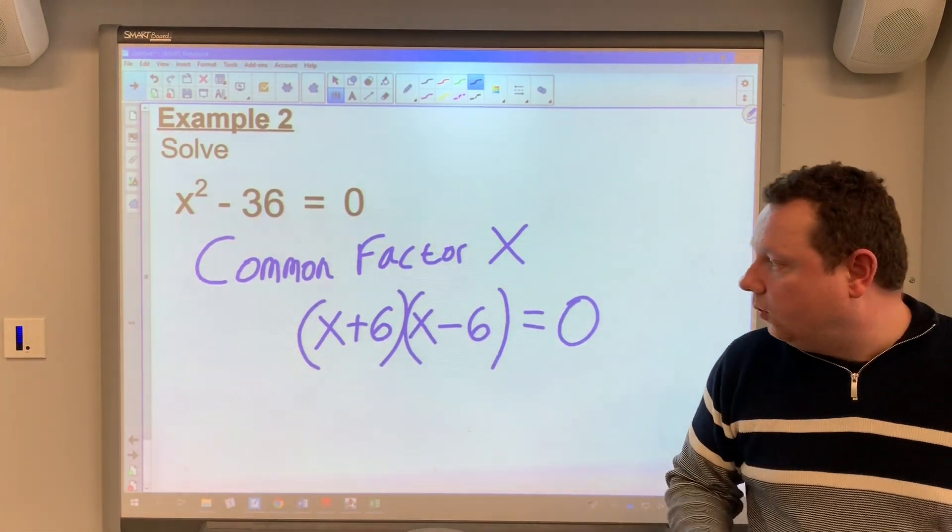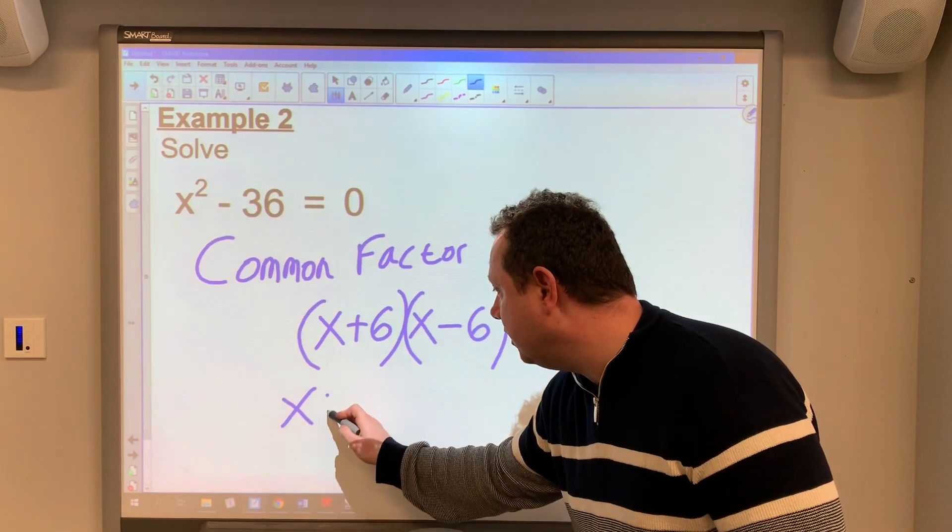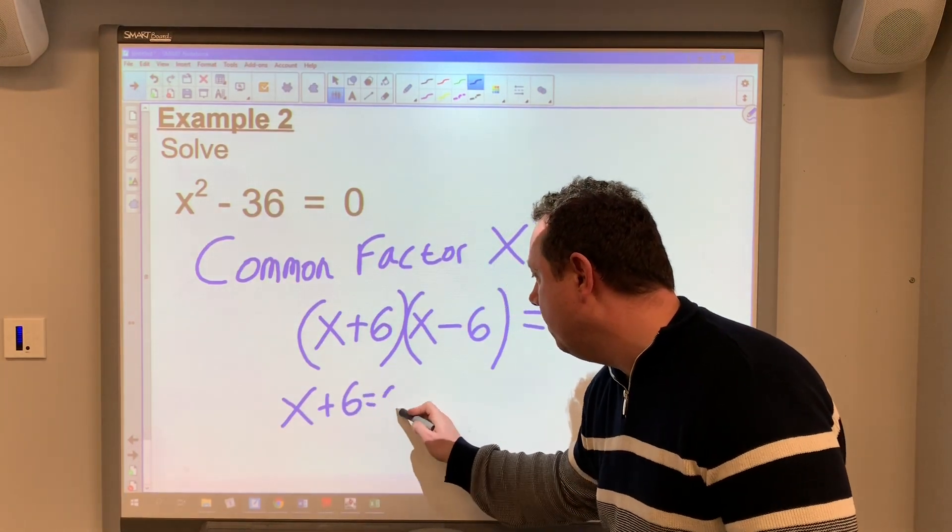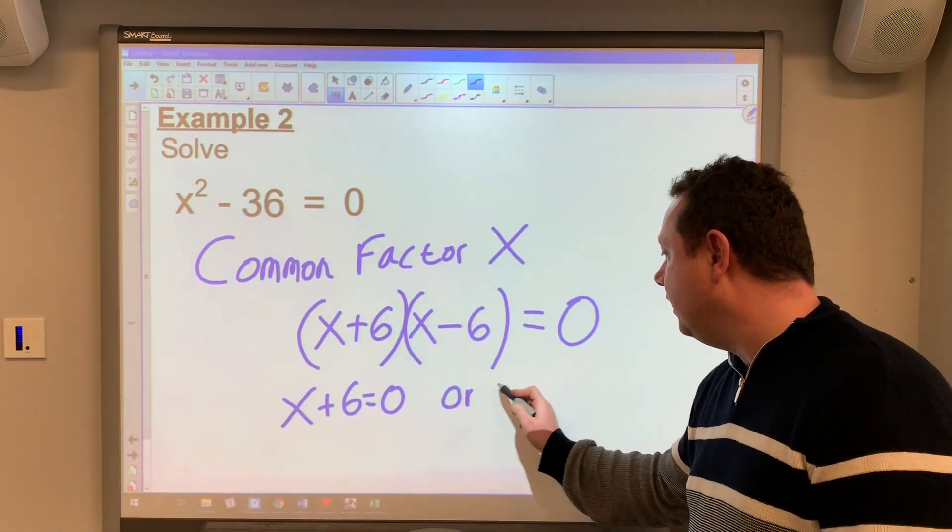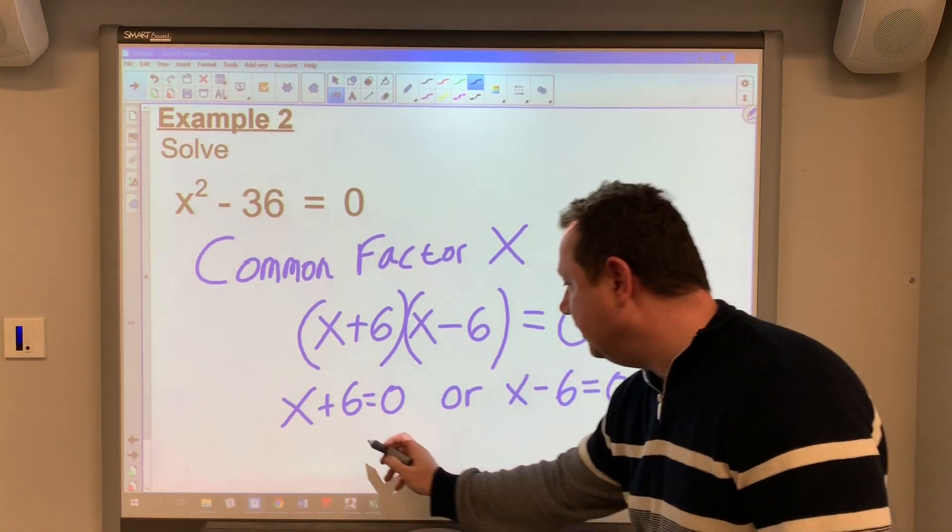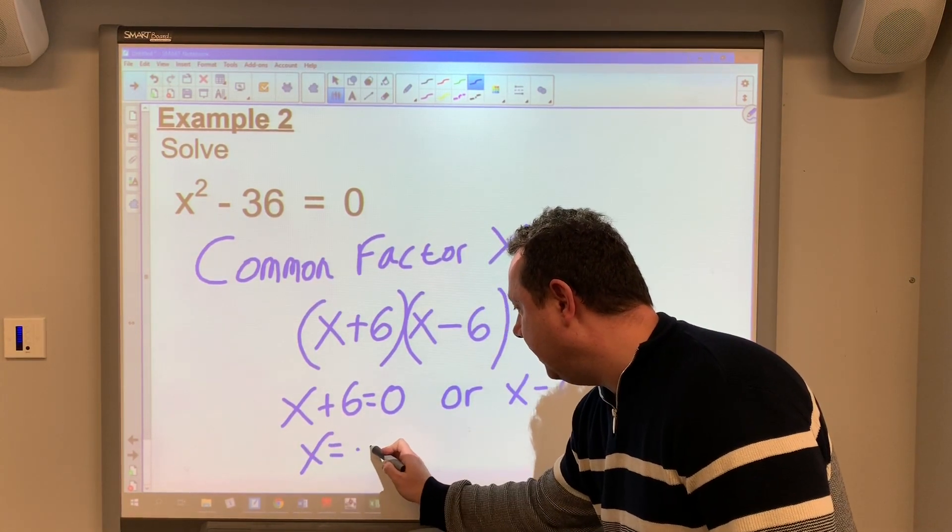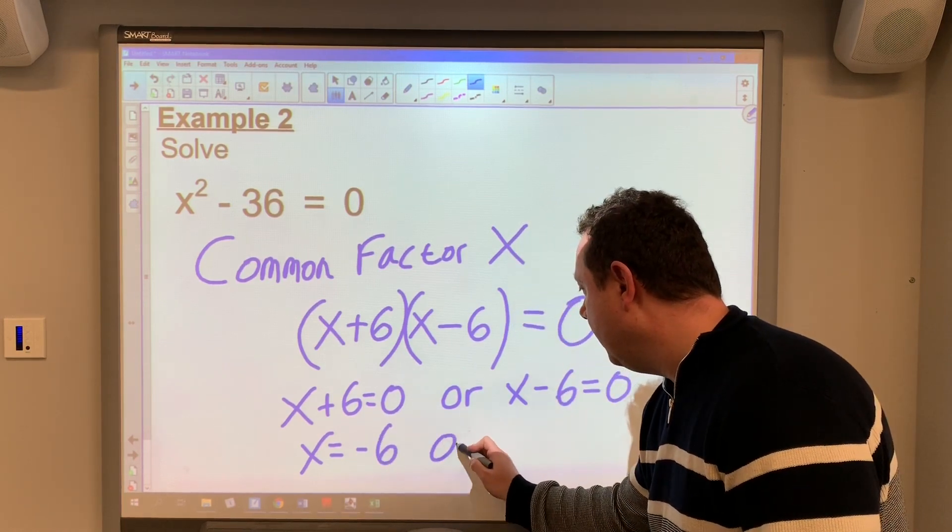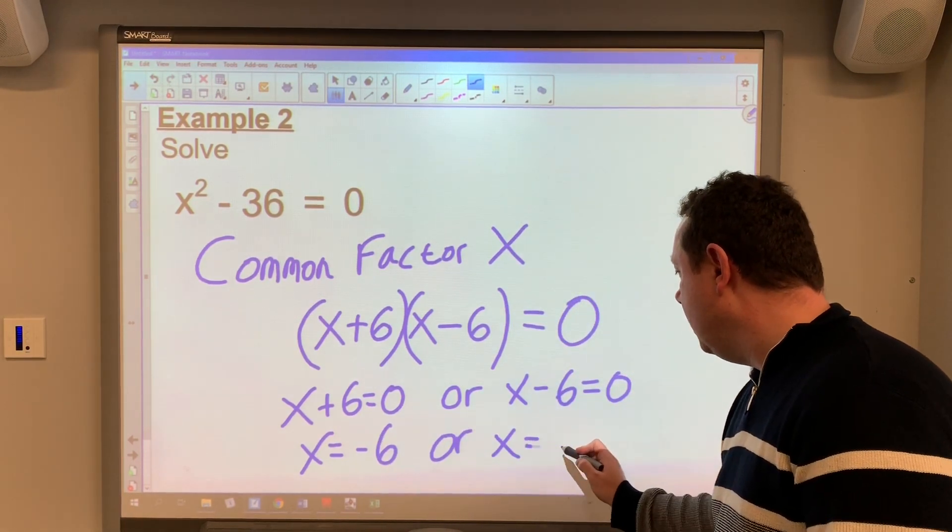So x equals... x + 6, sorry, equals zero. Or x - 6 = 0. So that means that x = -6 or x = 6.